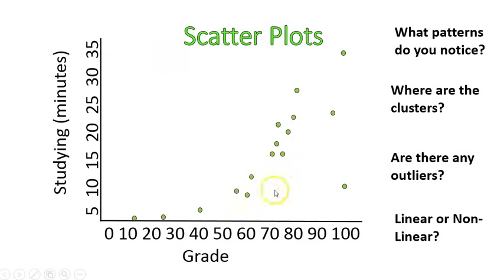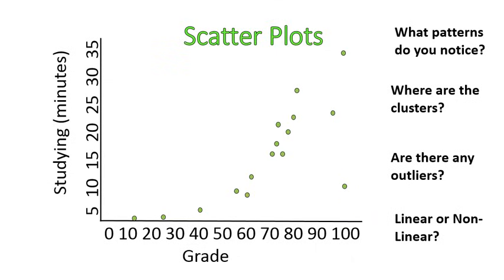There are some clusters in the middle — most of the grades tend to be between 60 and 80. And there are some outliers that sort of stick out. Like this person who spent zero minutes studying and got a grade of 10% — that's very abnormal. Also, this person who spent 10 minutes studying got a grade of 100, which is also abnormal. Those are your outliers — pieces of data that don't really fit the pattern, but they're the exception to the rule.